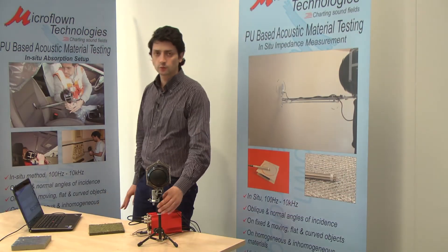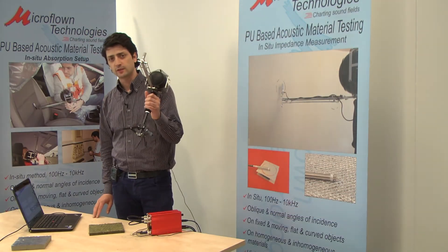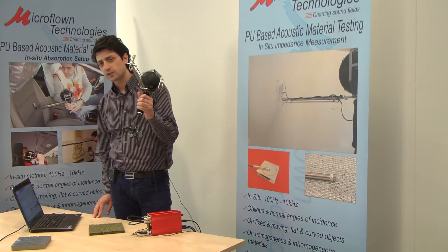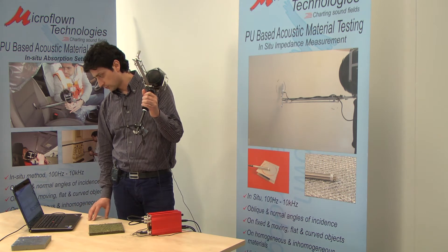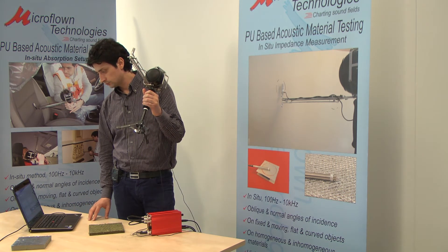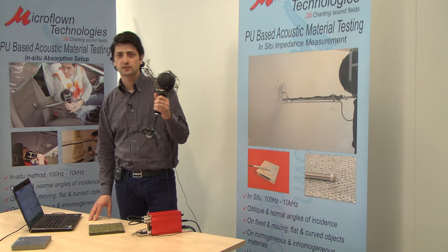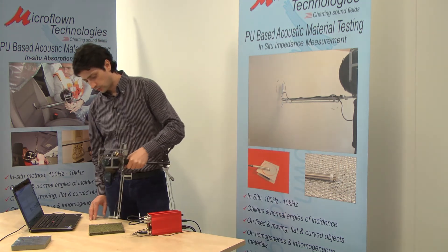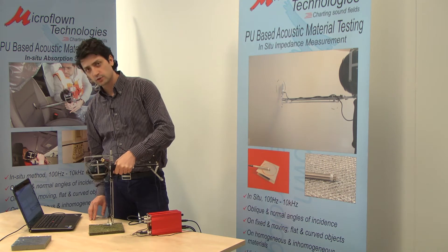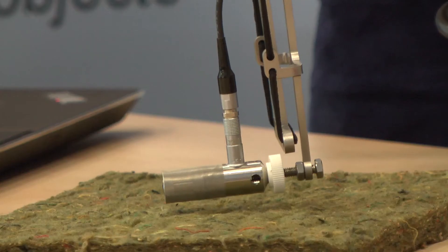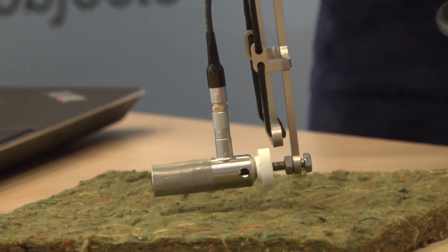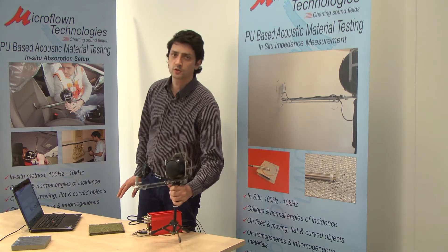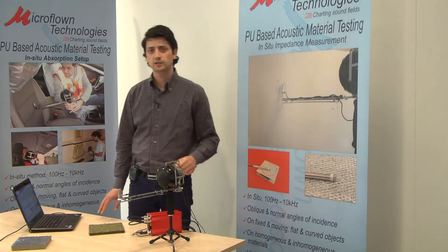The measurement procedure is very simple. First, we use the impedance setup in the free field for the calibration, as far as possible from reflective surfaces. After this calibration, the probe is moved very close to the sample and the impedance is measured at the surface. With these two measurements it is possible to calculate the reflection coefficient and the absorption.